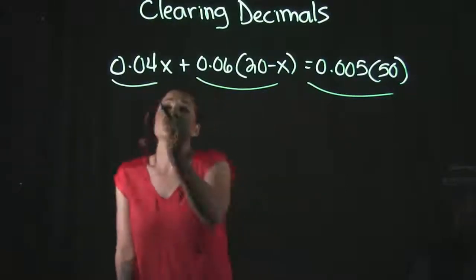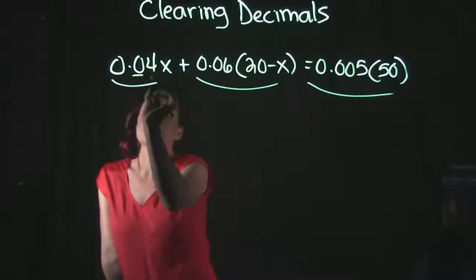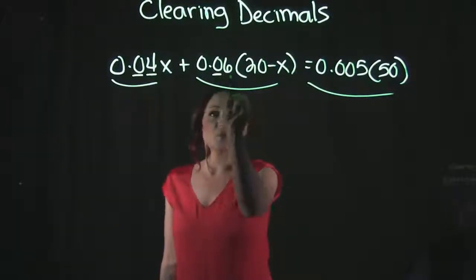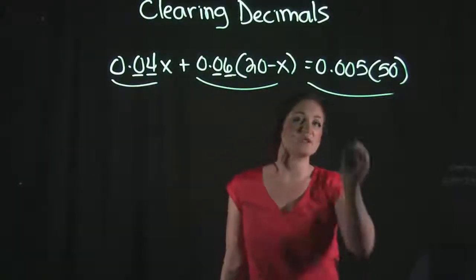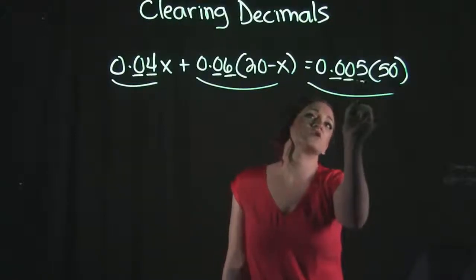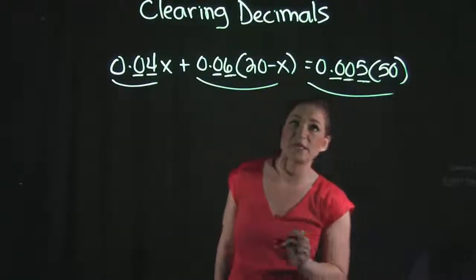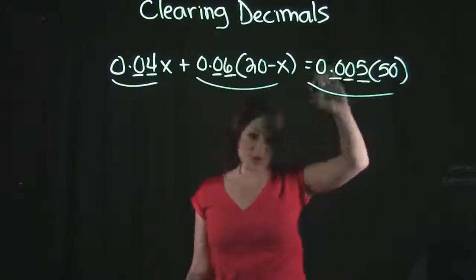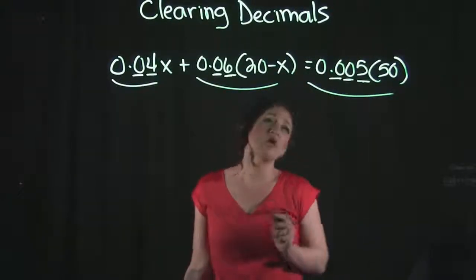And out of those three terms, this first term has two decimal place values. This middle term has two decimal place values. And this one has three decimal place values. The one over here on my right-hand side has the most amount of decimal place values with three.